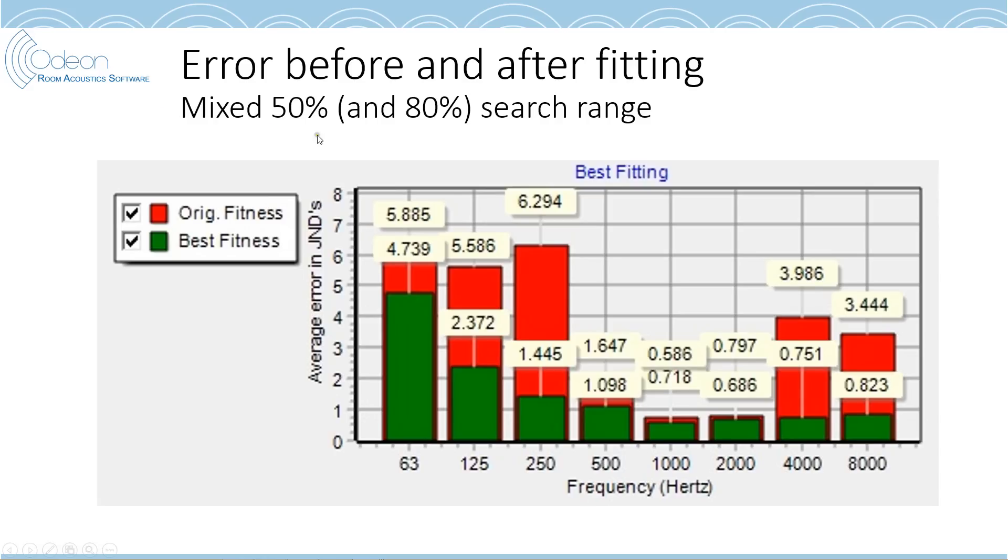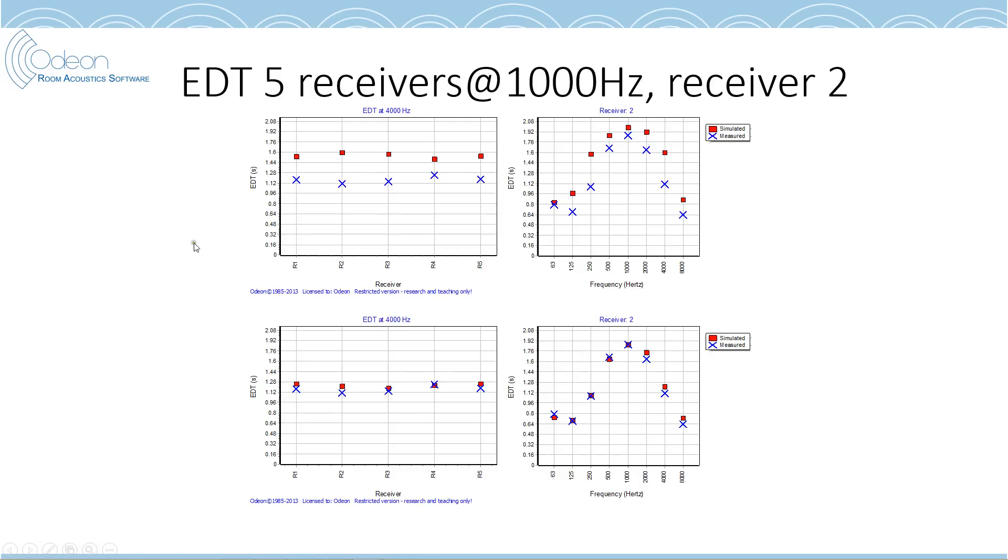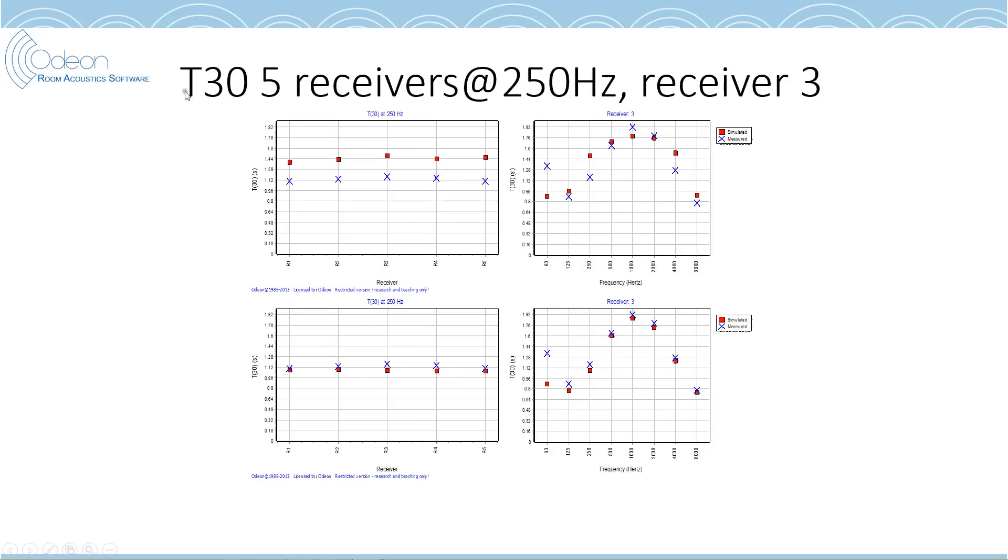Here we did the same with 50% search range, I think. Another, yeah, less variation on the materials. Here you see how EDT before matching, before the optimization process and after the optimization process, we can see that we have very nice agreement between measured and simulated results. And if you look here at receiver 2, we see also with respect to frequency, the agreement is very nice. We can do the same for T30. Here we have looked at lower frequencies, and again, you can see we have very nice agreement at 250 Hz.